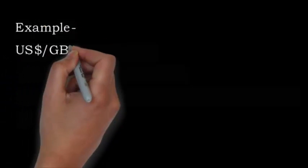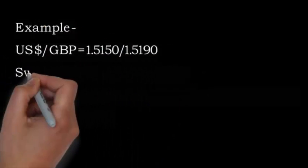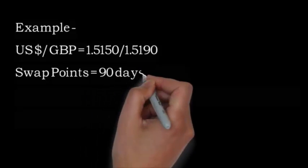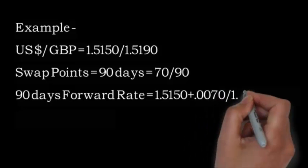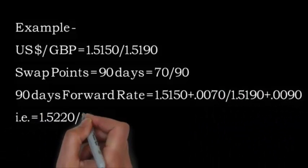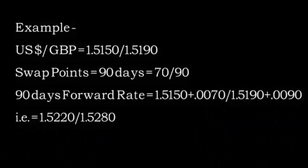Now, let's discuss one of these adjustments through an example. US dollar per pound is 1.5150 and 1.5190. Swap points are increasing, which means they are at a premium. We need to add them and need to find the 90 days forward rate.